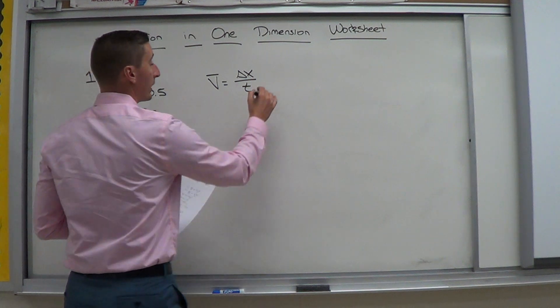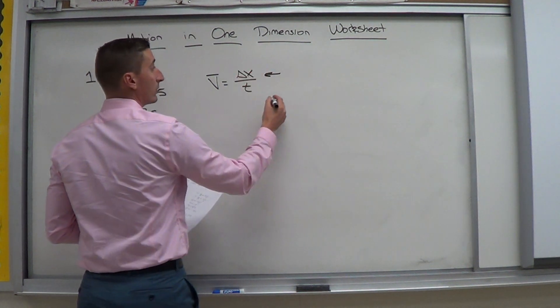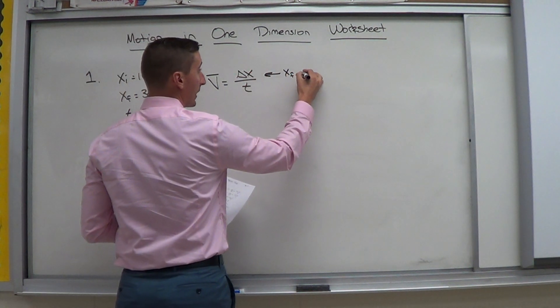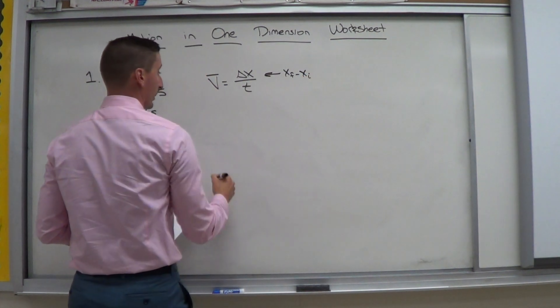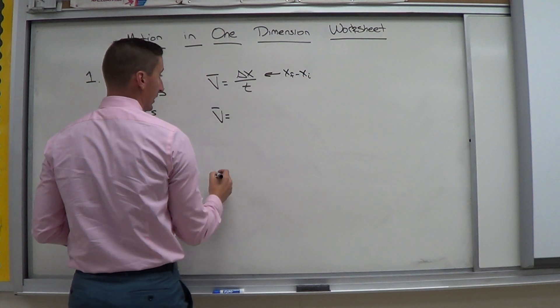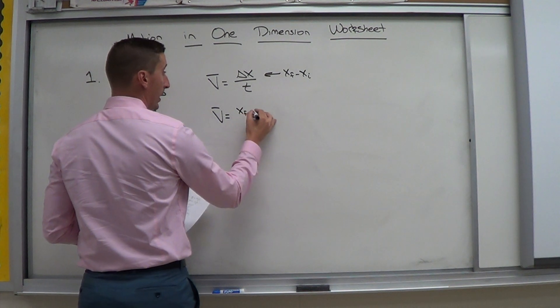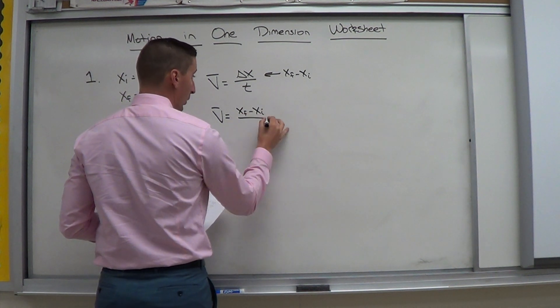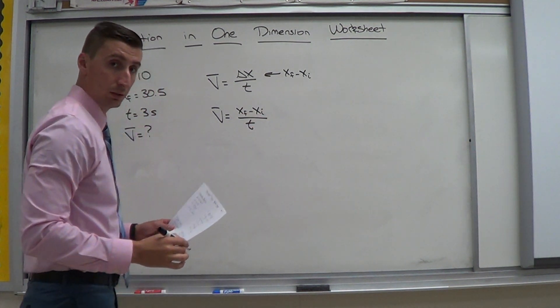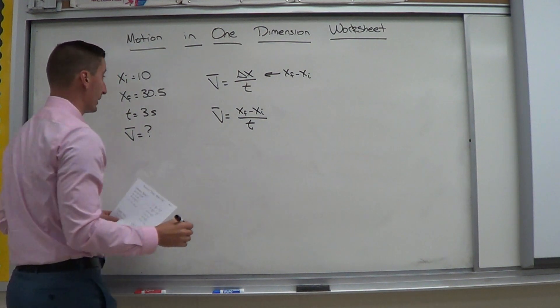Now, remember, you can expand this. This is delta. So in other words, it's xf minus xi. So I can rewrite this as average velocity is equal to xf minus xi all over t. And then all I do is plug in here.